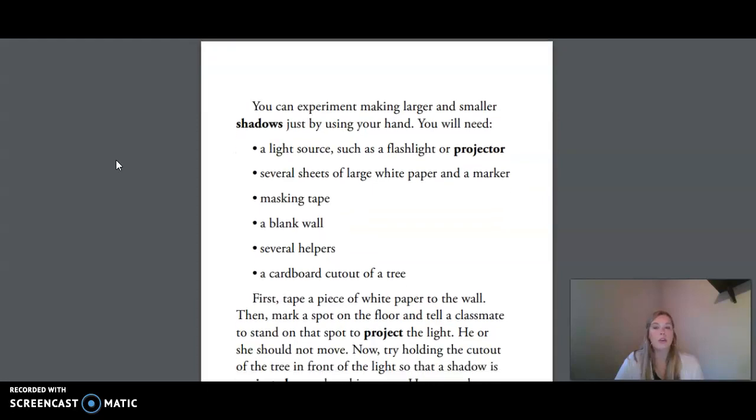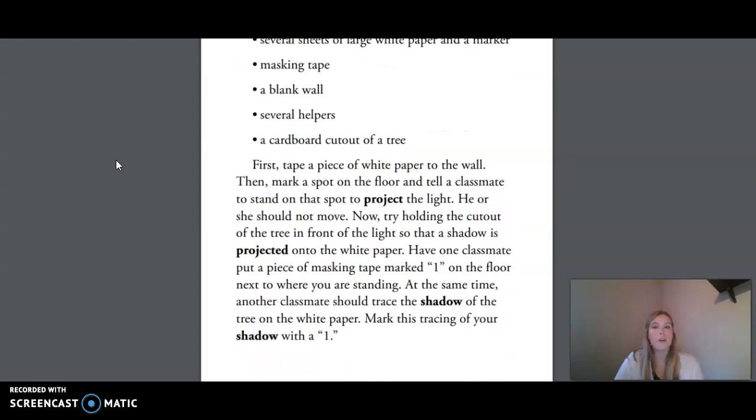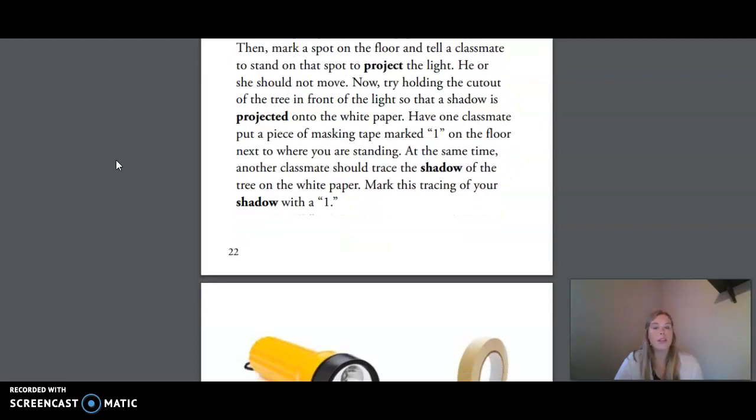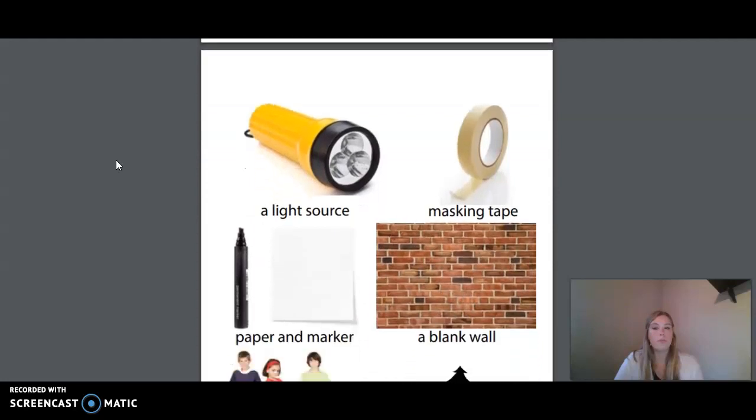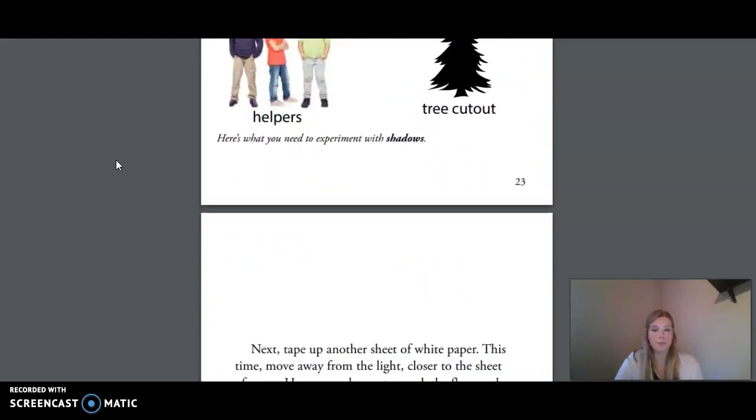You can experiment making larger and smaller shadows just by using your hand. You will need a light source such as a flashlight or projector, several sheets of large white paper and a marker, masking tape, a blank wall, several helpers, and a cardboard cutout of a tree. First, tape a piece of white paper to the wall. Then mark a spot on the floor and tell a classmate to stand on that spot to project the light. He or she should not move. Now try holding the cutout of the tree in front of the light so that a shadow is projected onto the white paper. Have one classmate put a piece of masking tape marked 1 on the floor next to where you are standing. At the same time, another classmate should trace the shadow of the tree on the white paper. Mark this tracing of your shadow with a 1.